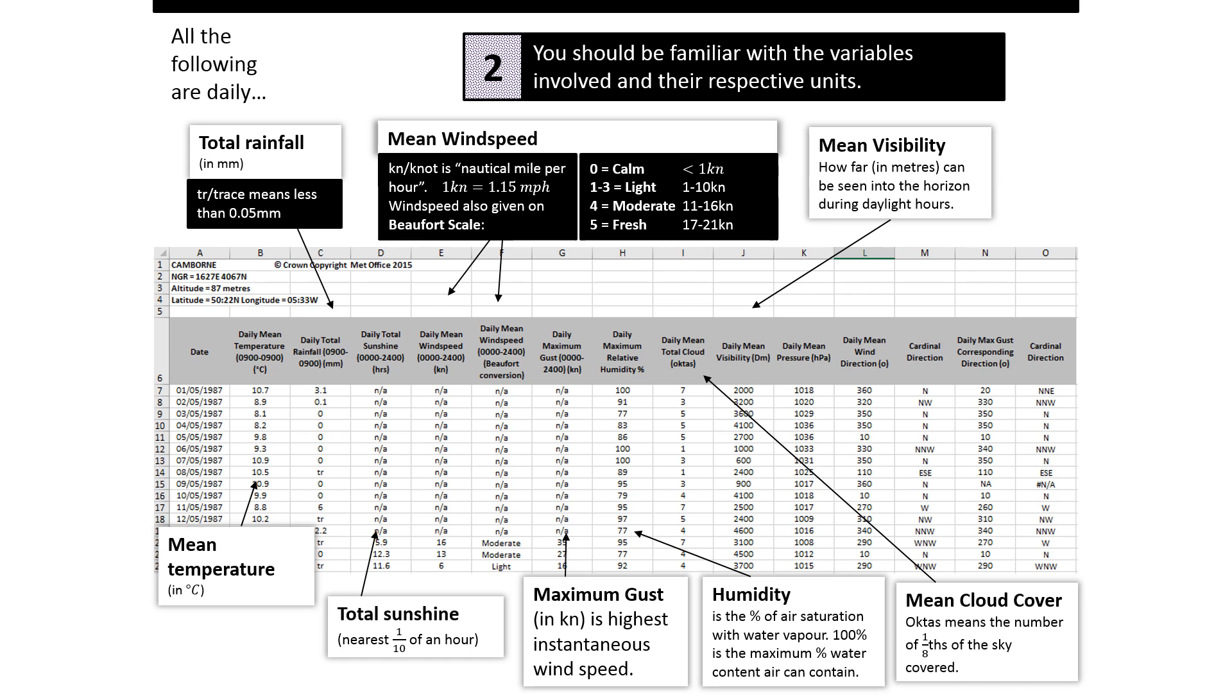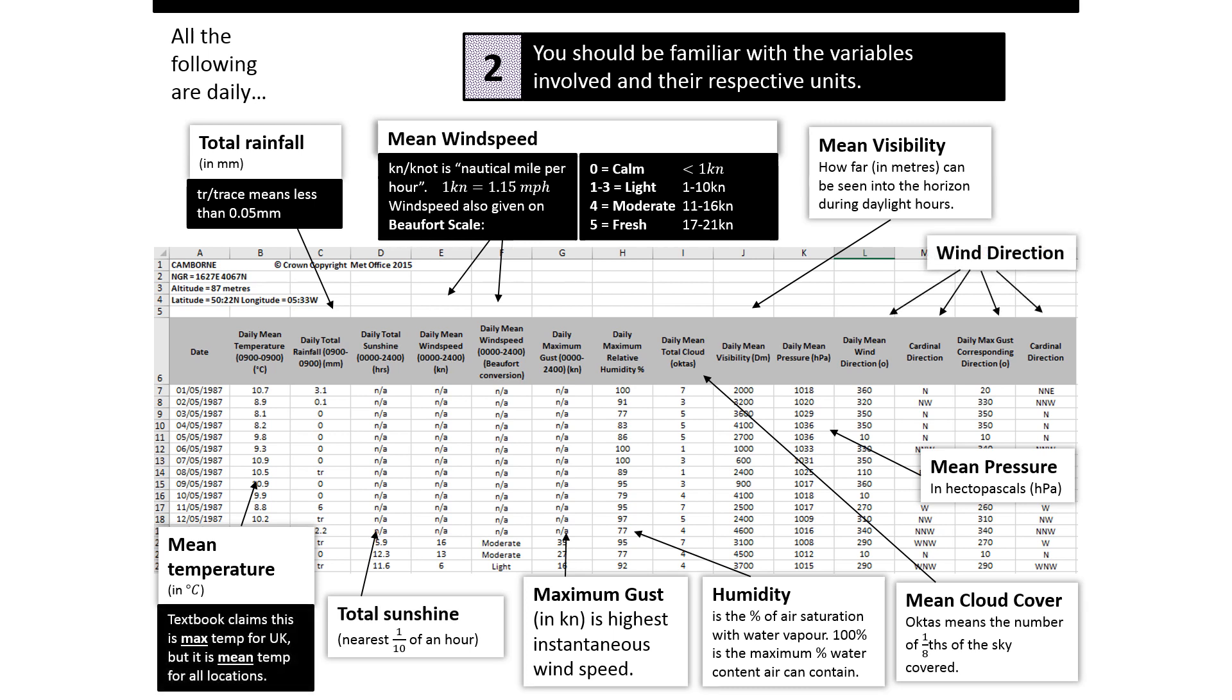TR in rainfall means trace. And then look, some of the variables have qualitative word data, so the Beaufort scale and the cardinal direction is given as a word data.